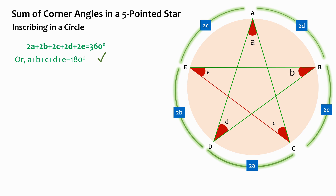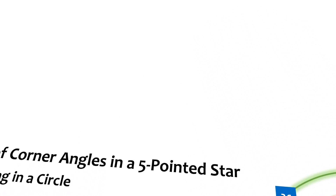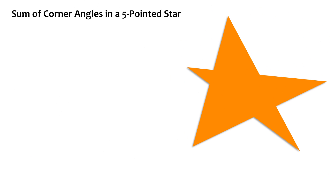Now if the pentagonal star is not a regular pentagonal star, it might not be done this way, because it might not be possible for five given random points to be inscribed in a circle every time. In cases where it is possible, we can use this method. Let's see how to do it when this will not be a regular star but a five-pointed star — something like this.